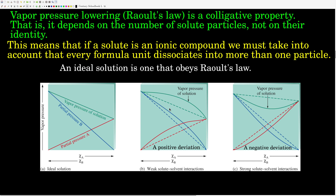If the interaction between solute and solvent particles is weaker than the interaction between solvent particles with each other, we get a positive deviation from Raoult's Law — the graph is concave down. On the other hand, if the interaction between solute and solvent particles is stronger than between solvent particles with each other, we get a negative deviation.